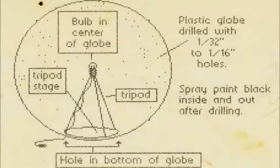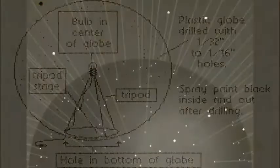I used a dremel tool to drill holes for the stars varying in size according to brightness. Then I painted the interior and exterior flat black. By painting it black on the inside the light would only pass straight through each hole.